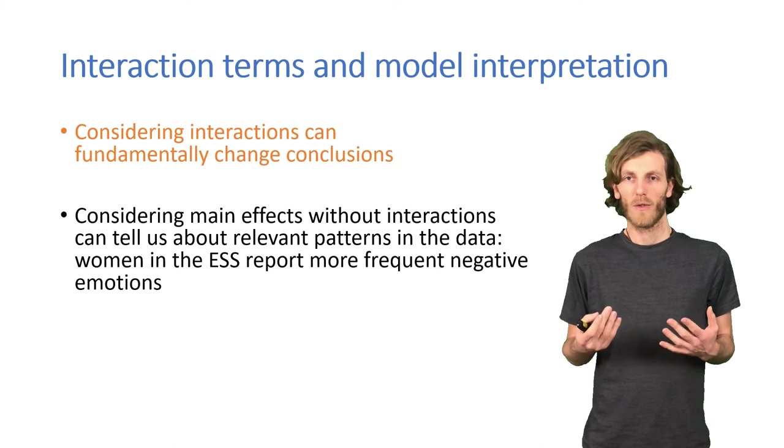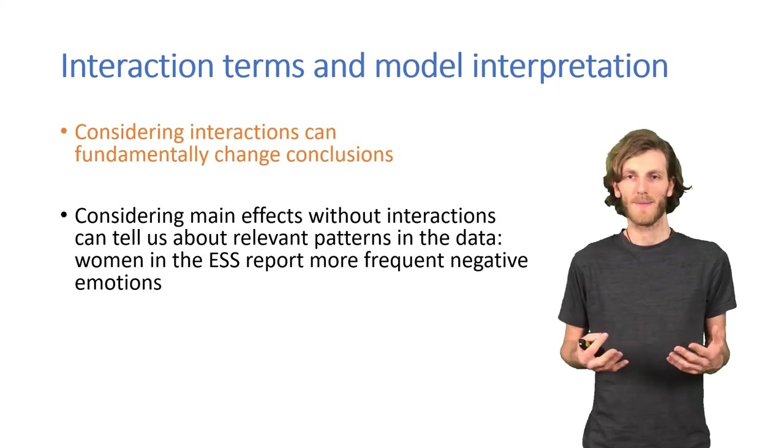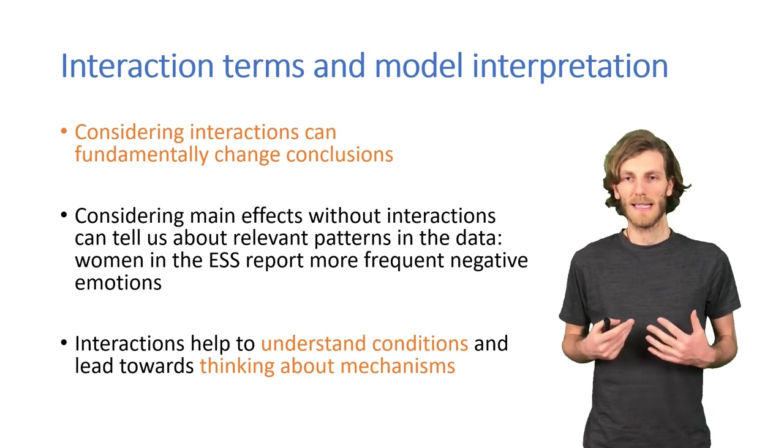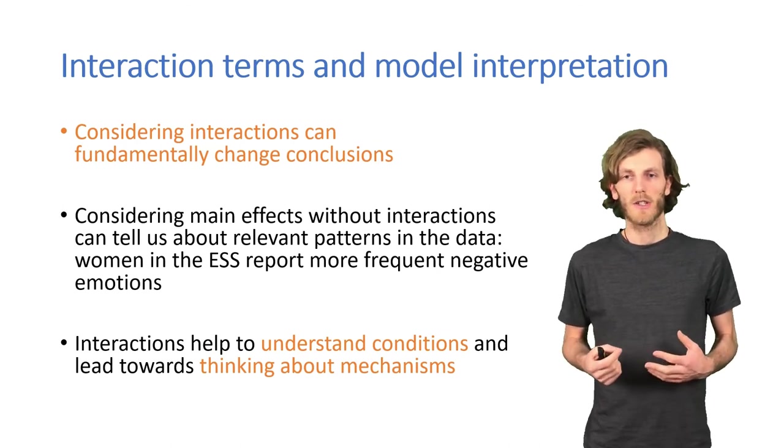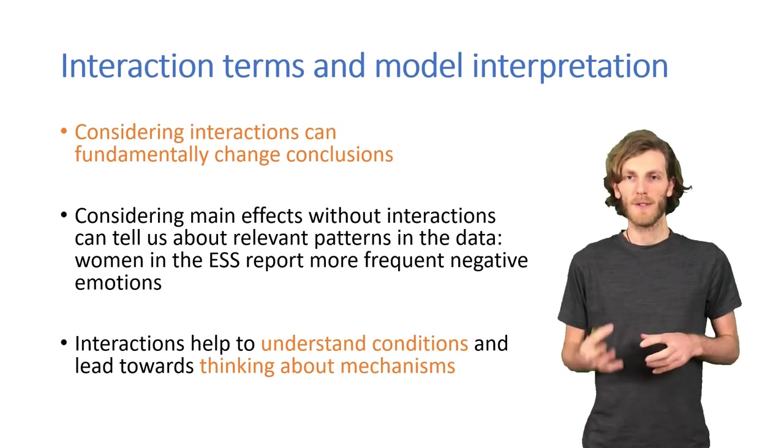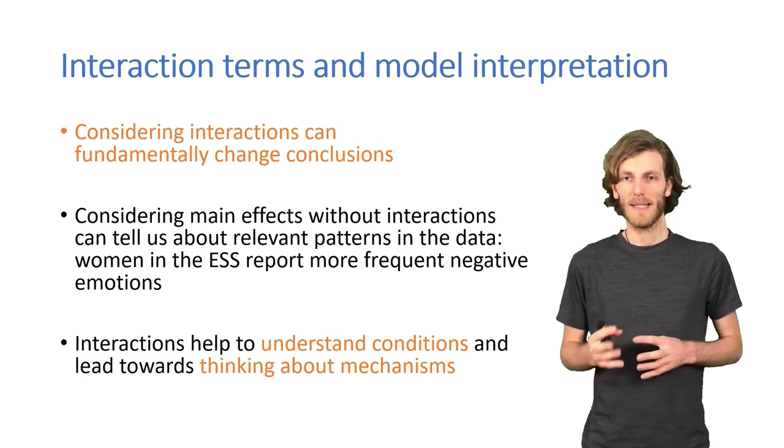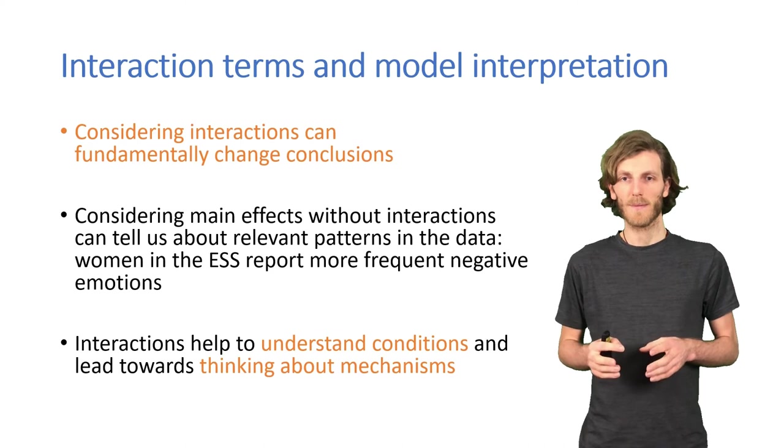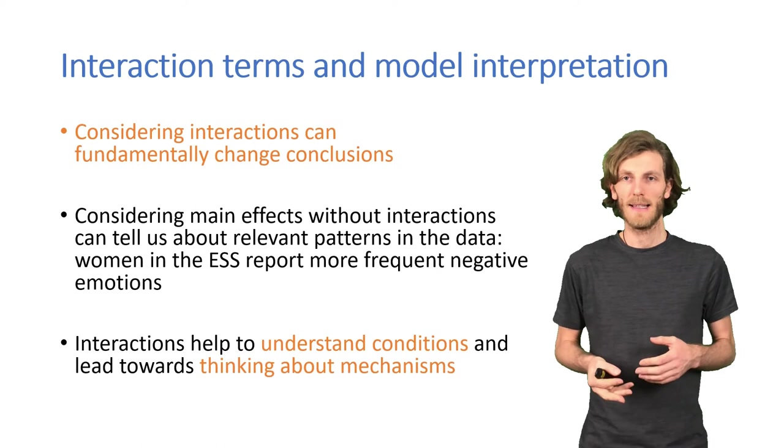So it can make sense to look at the main effects in the absence of an interaction, like we did in the first model, to just recognize interesting patterns in our data. And then to look at the interactions, to make sure that we learn about boundary conditions, about limitations, that we can start to think about mechanisms. We'll look at some more examples in class and discuss what interactions can tell us.